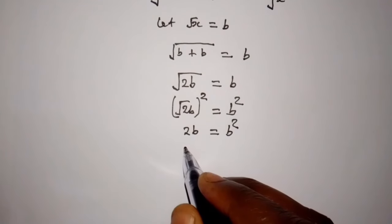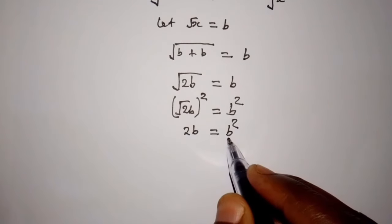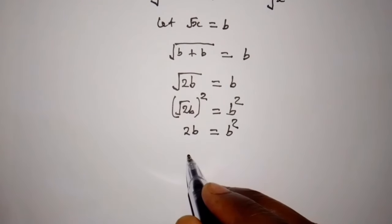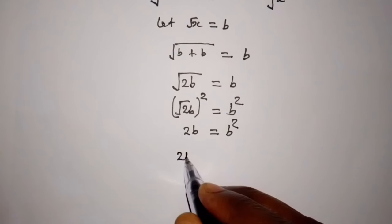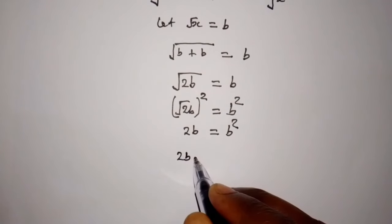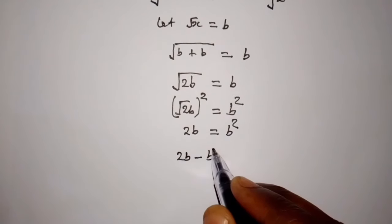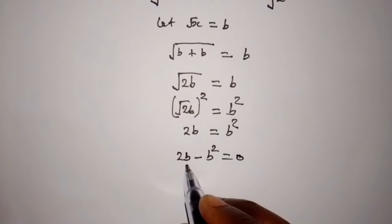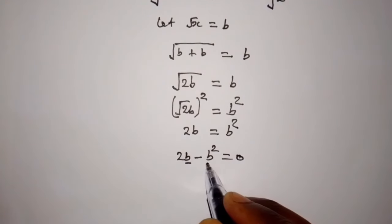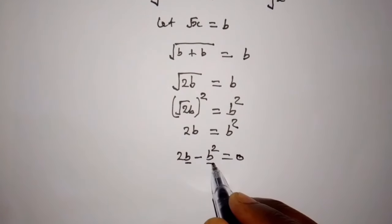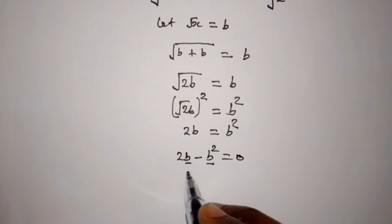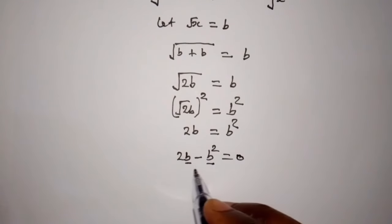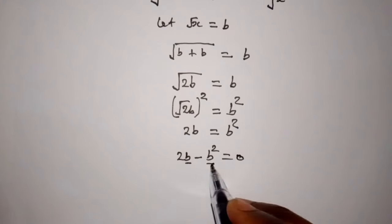We can bring b squared to the other side. So 2b minus b squared is equal to 0. We can see that b is common here, so we factor b outside.